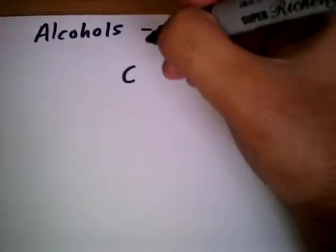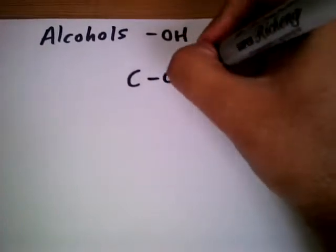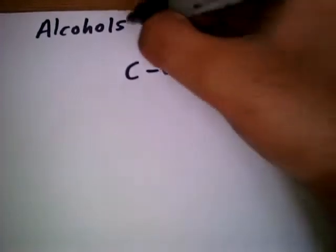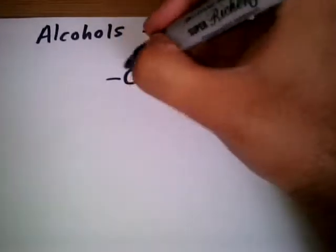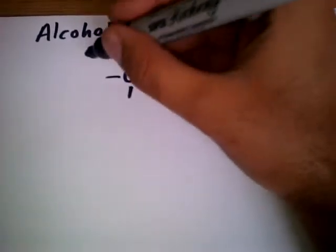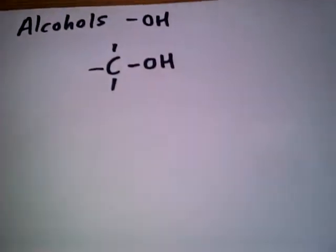So what that means is you'll have a carbon group here, it will be saturated which means there won't be any double bonds. It will have an OH group and the fact that it's SP3 hybridized means it can make 4 bonds like this. And these can be different functional groups and we'll go into that in more detail, the types of alcohols you can have.